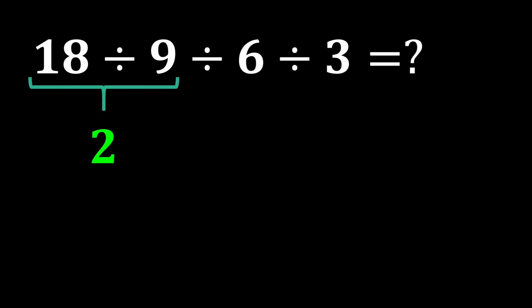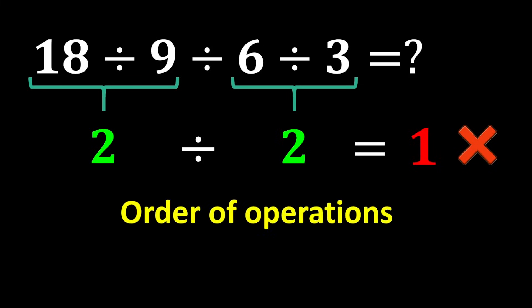18 divided by 9 gives us 2 and 6 divided by 3 again gives us 2. In the end, 2 divided by 2 gives us 1. But this answer is not correct because we did not follow one of the most important rules of mathematics, called the order of operations.